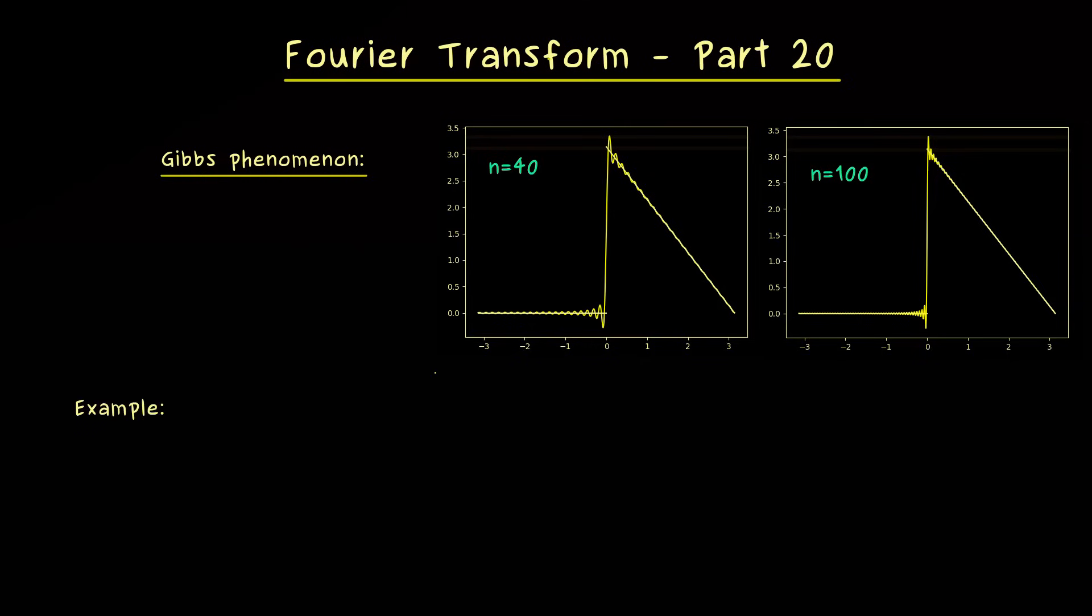And we can actually prove it in general, but to keep it short let's prove it for a given example. I want to take a standard example of a step function like we discussed in part 6 already. Let's define this function f that only takes the values 1 and 0. As you can see, this function has a negative jump at the origin. It goes from 1 to 0.